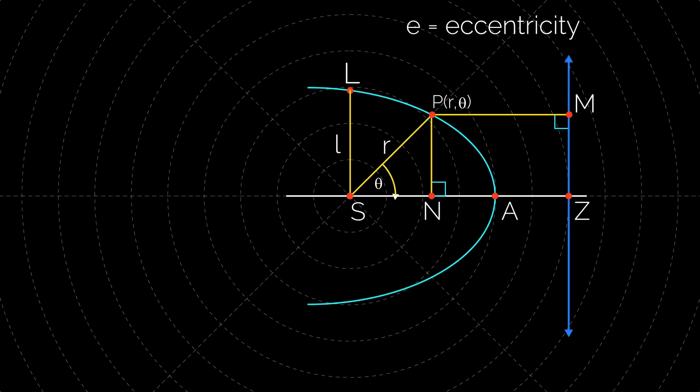When the direction of initial line is ZS instead of SZ, then the equation of conic is l/r = 1 - e cos θ. In this case, SP makes an angle π - θ with the initial line ZS.